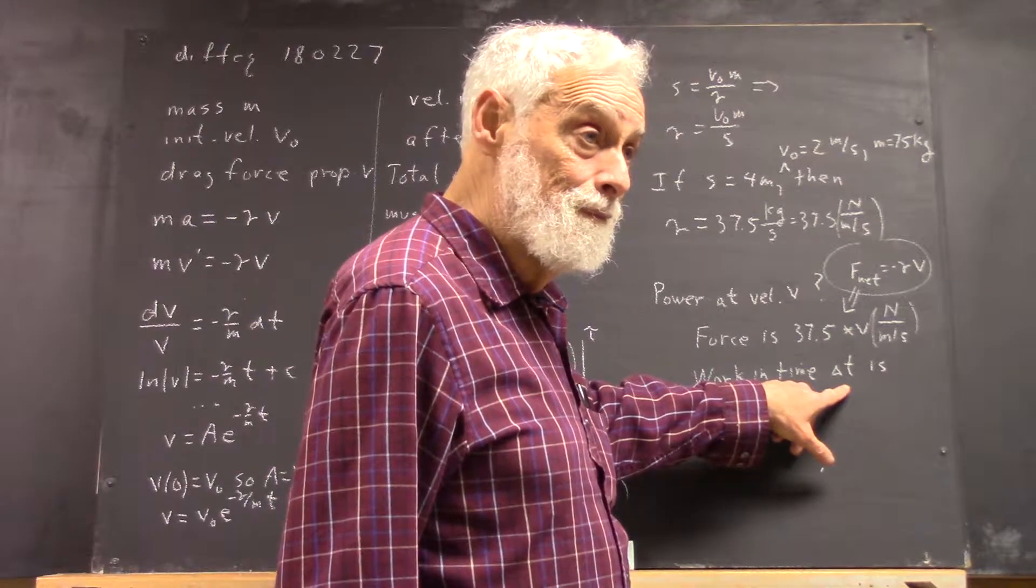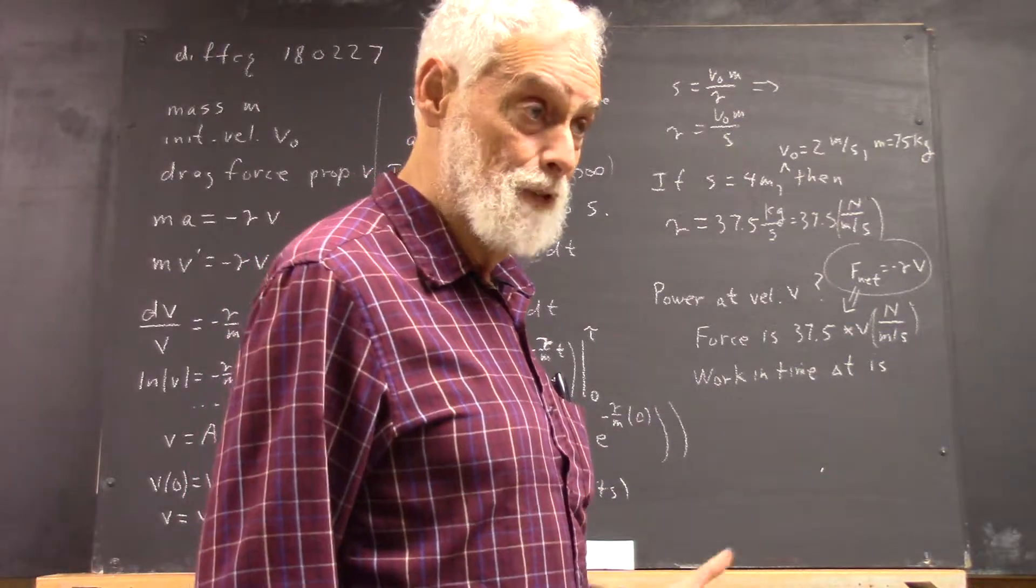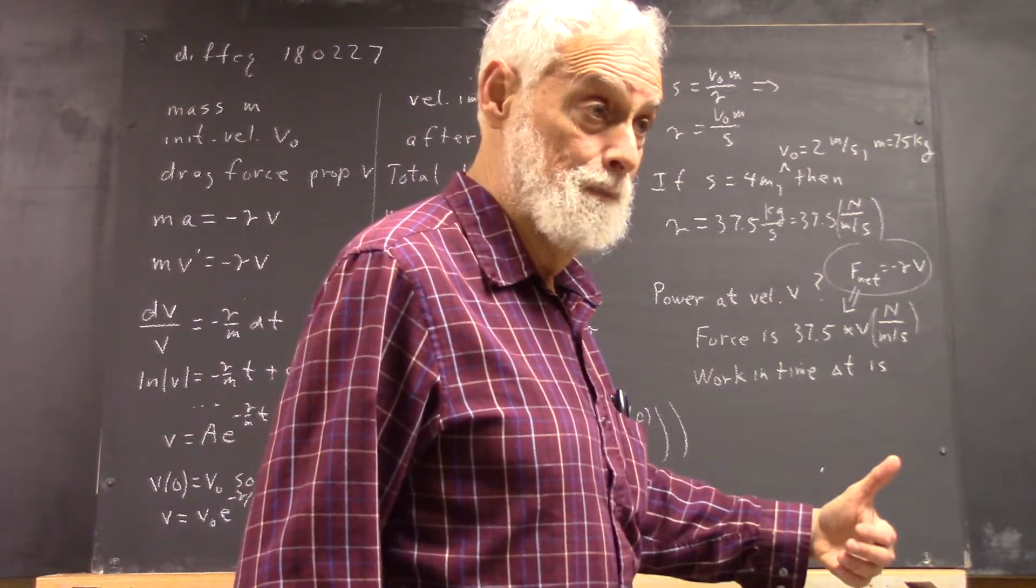Meaning that if I can find the work done in time delta T and divide that by delta T, I get the power, because power is work done per unit time.